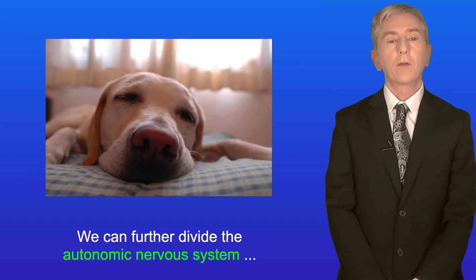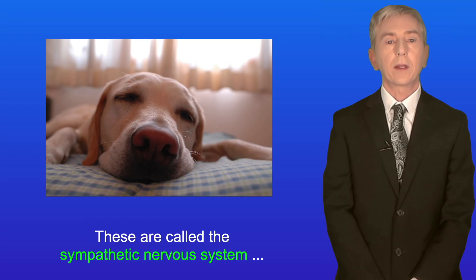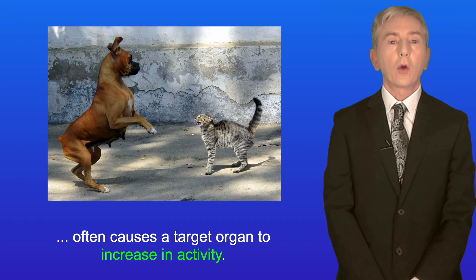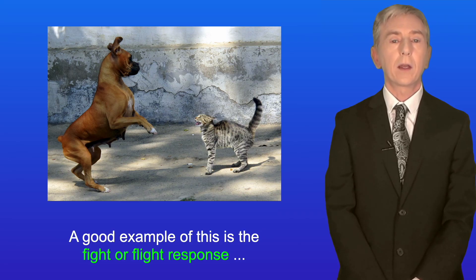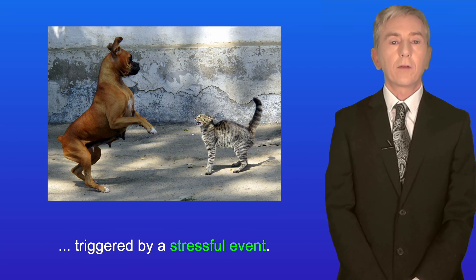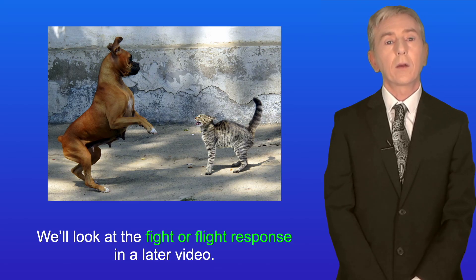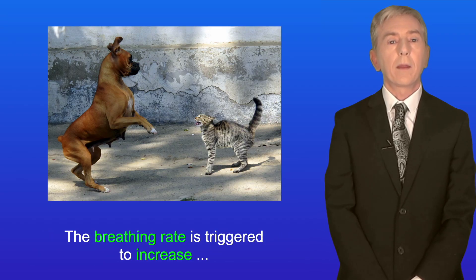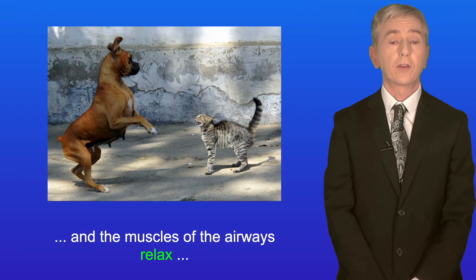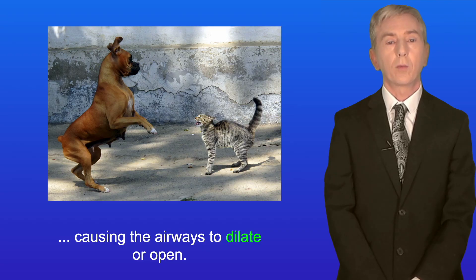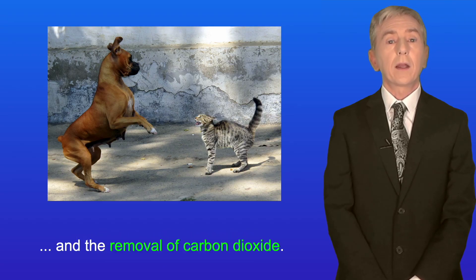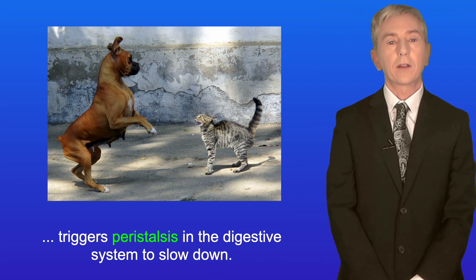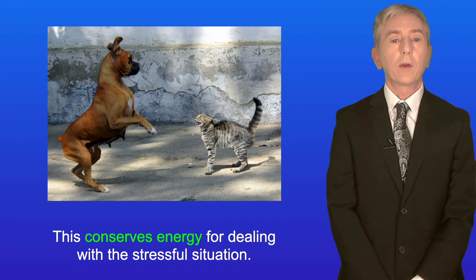We can further divide the autonomic nervous system into two functional parts: the sympathetic nervous system and the parasympathetic nervous system. The sympathetic nervous system often causes a target organ to increase in activity. A good example is the fight or flight response triggered by a stressful event. In this case, the sympathetic nervous system triggers the heart rate to increase, increasing the supply of blood to muscles. The breathing rate is triggered to increase, and the muscles of the airways relax, causing the airways to dilate. This increases the supply of oxygen to muscles and the removal of carbon dioxide. During fight or flight, the sympathetic nervous system also triggers peristalsis in the digestive system to slow down, conserving energy for dealing with a stressful situation.